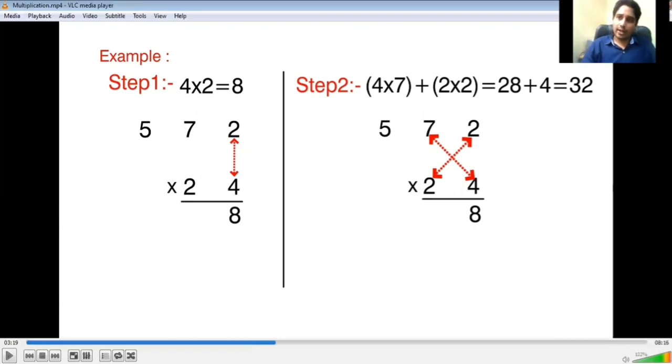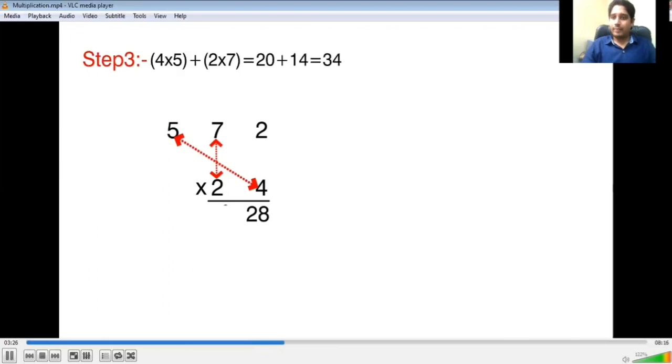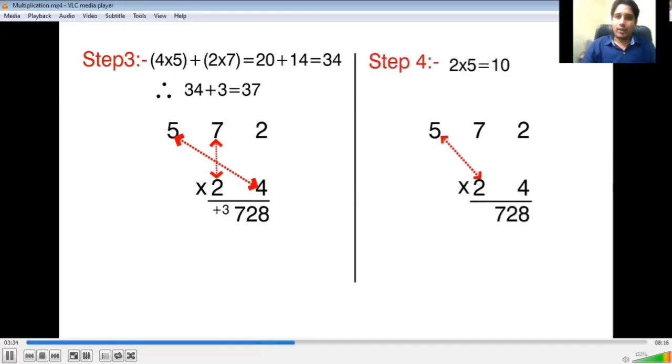Now go to step 3, which means 4 goes to 5, and then 2 goes to 7. In the next step, we have only two and five left, so obviously it will proceed towards the left. In the next step, 2 into 5 is 10. Carry forward the 3, so 13 is the result. So therefore I can say 572 into 24 is 13,728.